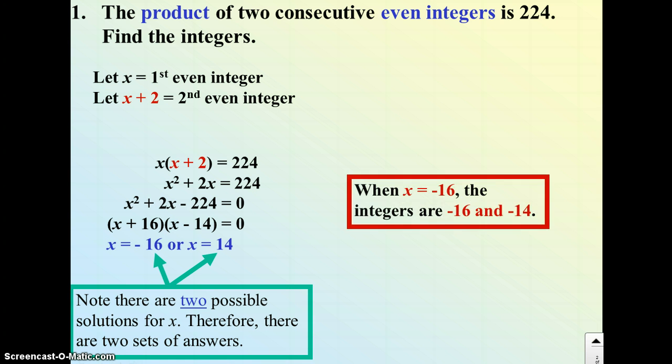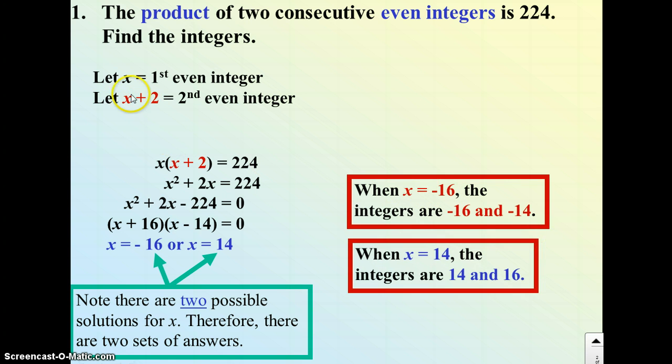When x is negative 16, then the integers are negative 16 and negative 16 plus 2, which is negative 14. When x is positive 14, there's two answers: 14 and 14 plus 2, which is 16. These are two situations that both satisfy the word problem.